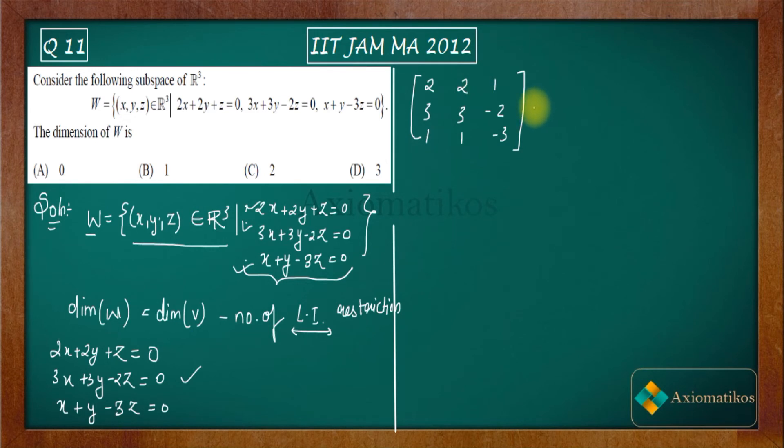The first operation that I will be imposing here is just interchanging row 1 and row 3. So what you will get then? You will get 1, 1, -3; 3, 3, -2; and then you will get 2, 2, 1.